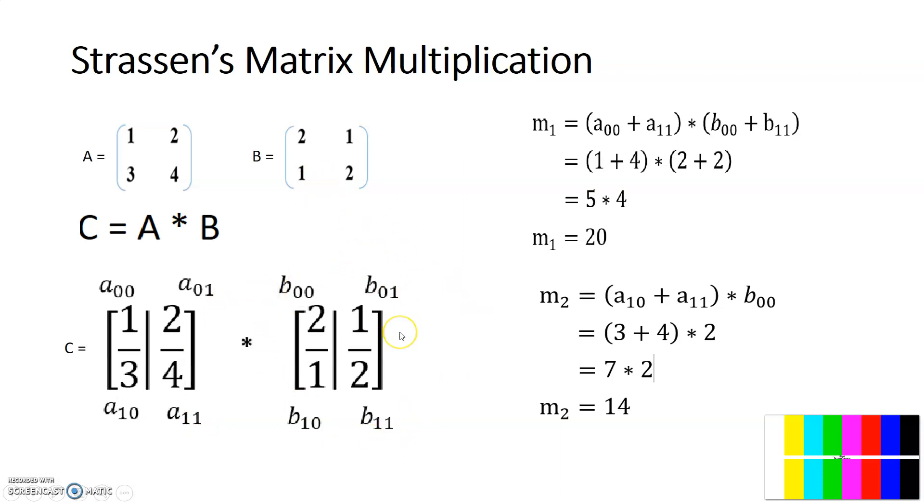After dividing as subparts, now we have to find the product of these two matrices. To get that one, here are the values we need to find: M1, M2, M3 values. To get those values, we have to use this equation. For finding the M1 value...